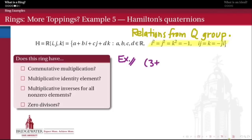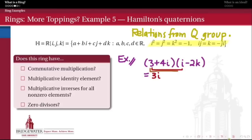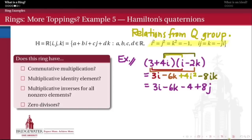As an example, what does multiplication look like in this ring? If I multiply (3 + 4i)(i − 2k), because multiplication distributes over addition, I can FOIL this product to get four different terms. Simplifying using the relations in the quaternion group, I find that this product is 3i − 6k − 4 + 8j. So that's how we multiply in the Hamilton's quaternion ring.